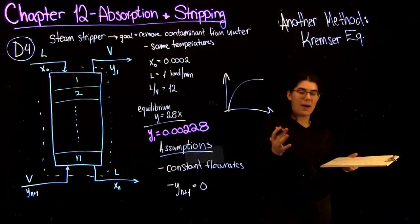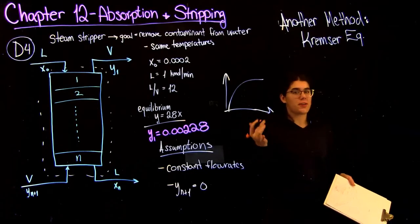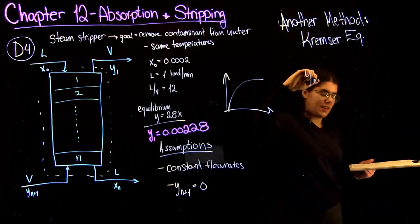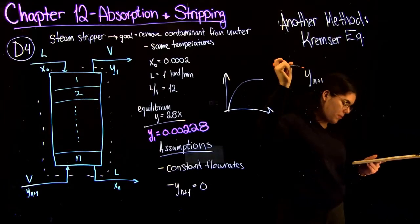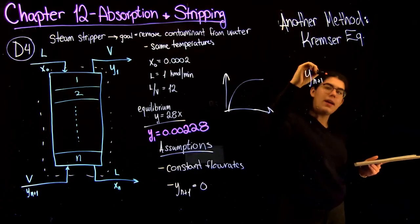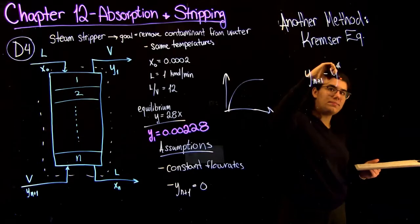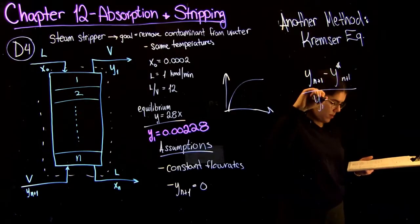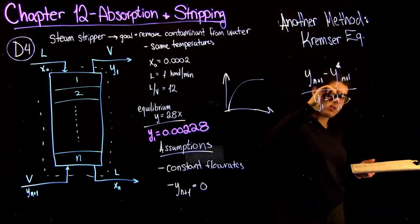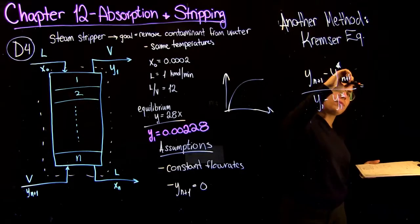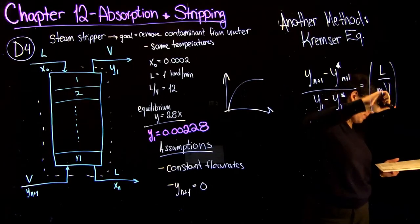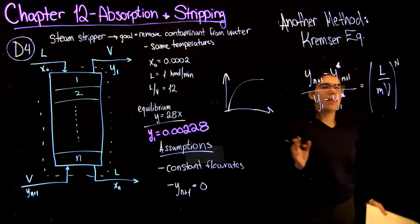So in this equation, there's many different forms and your textbook derives it in many different ways. One of the forms that you can write it as is like this. So y n plus 1 minus y star n plus 1 over y1 minus y1 star equals l over v m to the n.